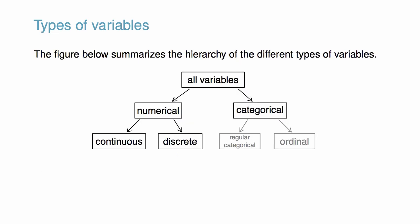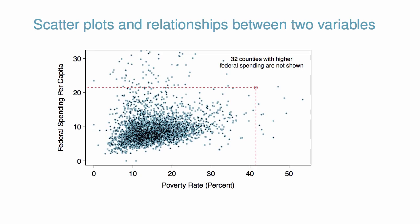The figure summarizes the hierarchy of the different types of variables. Many analyses are motivated by a researcher looking for a relationship between two or more variables. For example, we might ask: is federal spending, on average, higher or lower in counties with high rates of poverty? Scatterplots are one type of graph used to study the relationship between two numerical variables. The figure helps us explore this question.